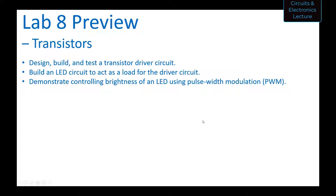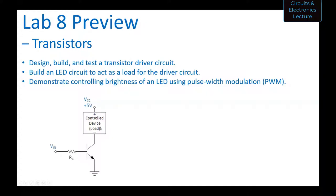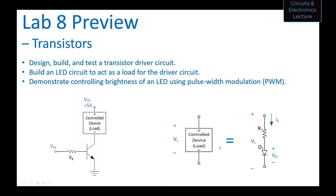You're going to use a transistor to do this. As the load, you'll build an LED circuit, and the driver circuit will control that LED circuit load. Then you'll demonstrate controlling the brightness of an LED using pulse width modulation. Your circuit will put the transistor into saturation — you'll design for some RB value such that the transistor goes into saturation when you apply five volts at the input.